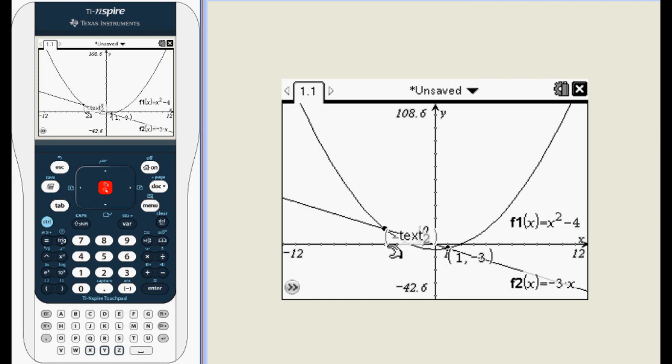In this case it adjusts to allow us to see the intersection points of negative 4 comma 12 and 1 comma negative 3.